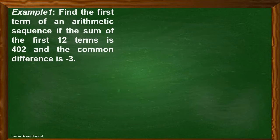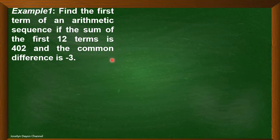Now, let's consider this example. Find the first term of an arithmetic sequence if the sum of the first 12 terms is 402 and the common difference is negative 3.